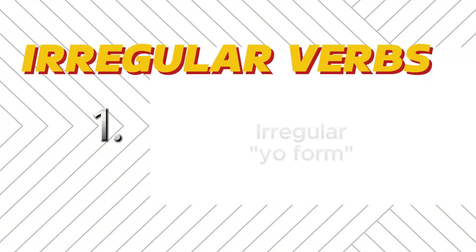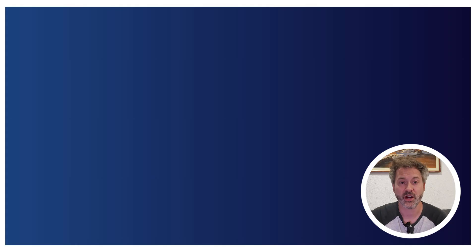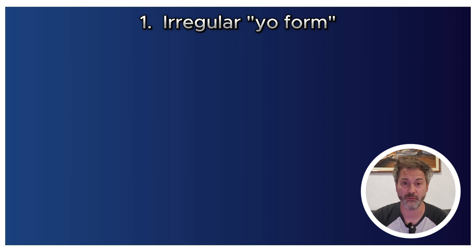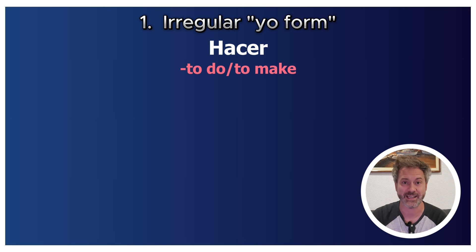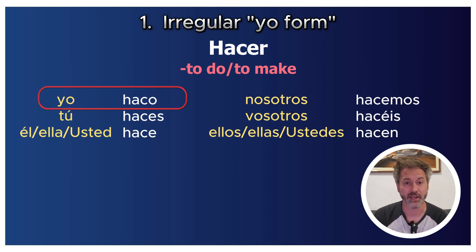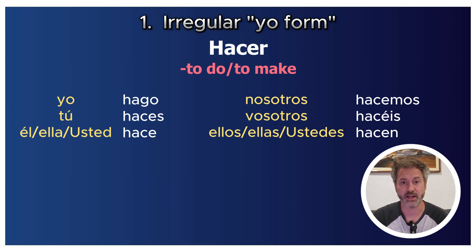If we're talking about irregular verbs that only change their endings — not stem-changing verbs — the easiest ones to start with are those that are only irregular in the yo form, and regular in all other forms. Take hacer: if it were regular, the yo form would be 'haso,' but the irregularity is that the C changes to G, giving us 'hago.' All the other forms of hacer stay the same.